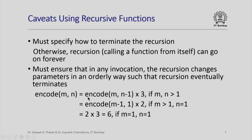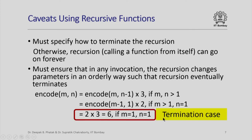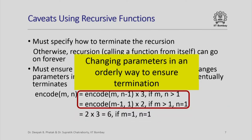For example, in the encode function, the termination case is when both m and n are 1 — we return the value 6. When a recursive call is made, if both m and n are greater than 1, n is decremented. So n will continue to decrement until it reaches 1, and when n becomes equal to 1 and m is still greater than 1, then m is decremented. So m will continue to decrement until both m and n become 1, reaching the termination case.